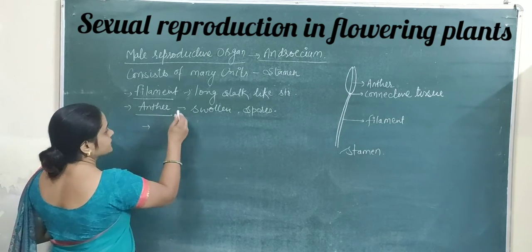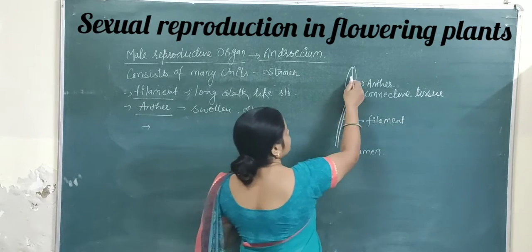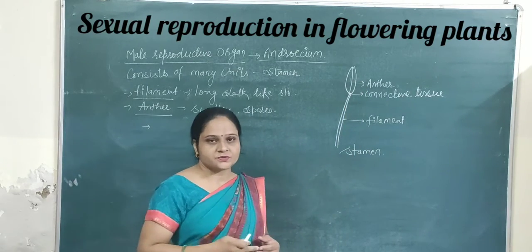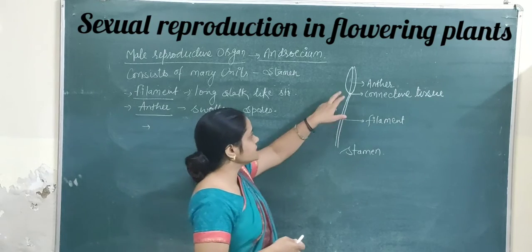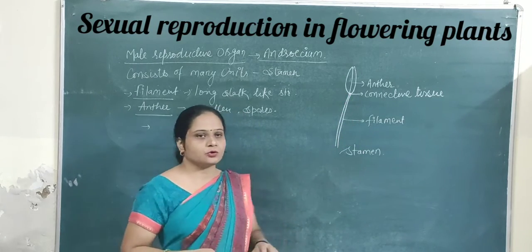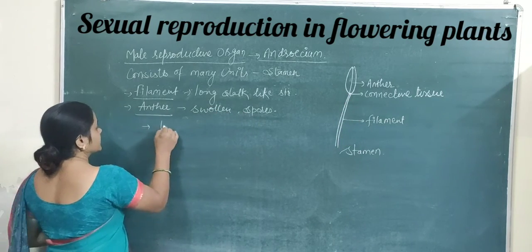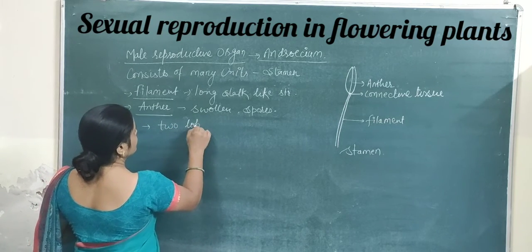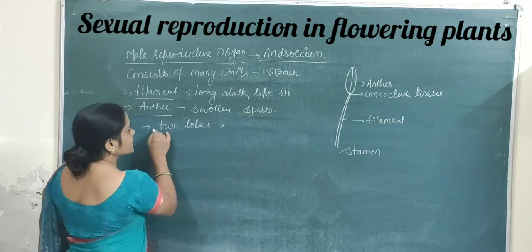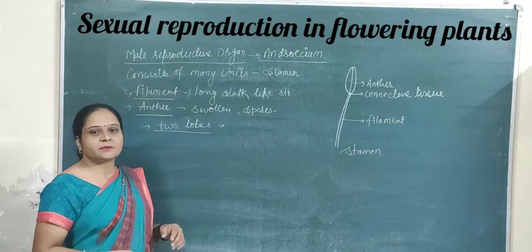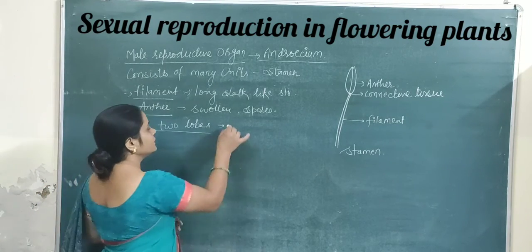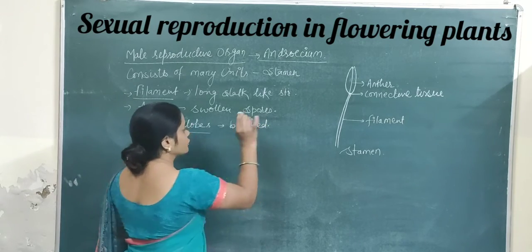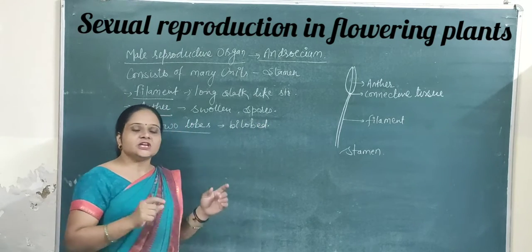As we can see here, there are two different lobes of the anther — the anther has two lobes. When a stamen has two lobes present, that condition is named as the bilobed condition.